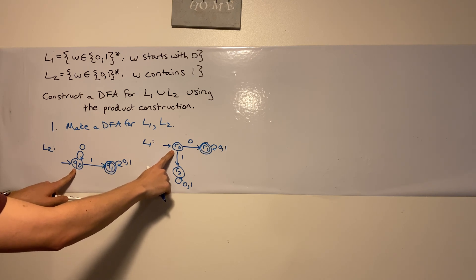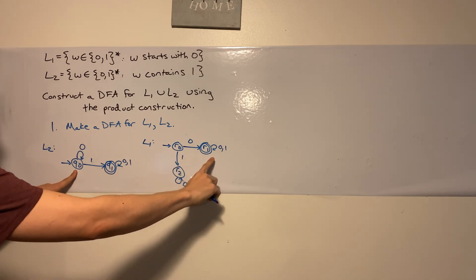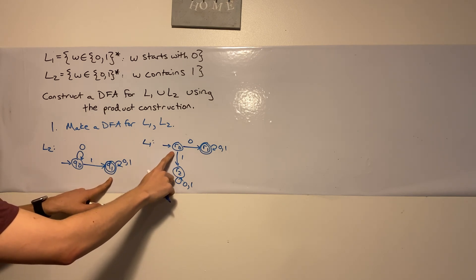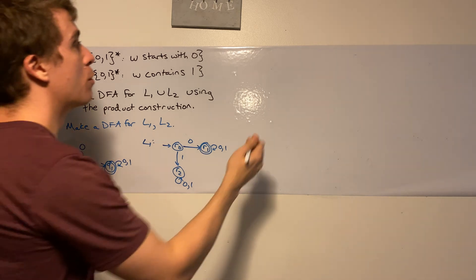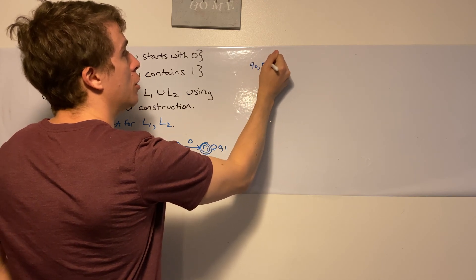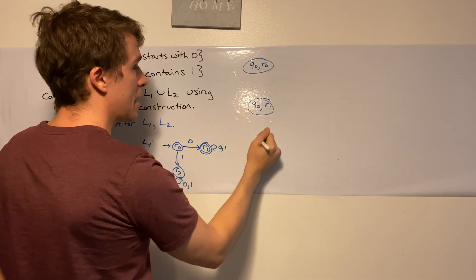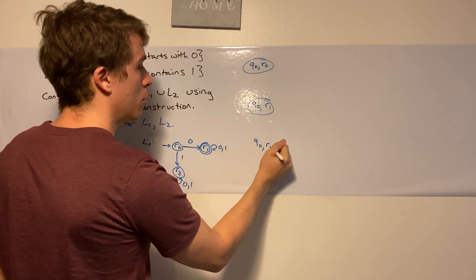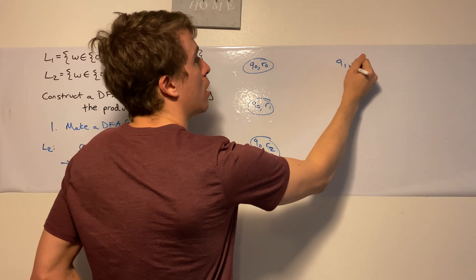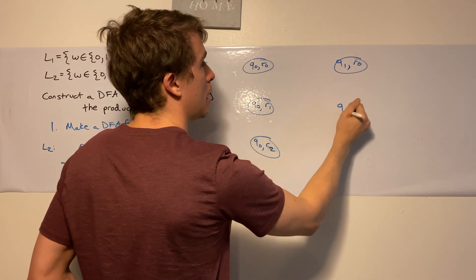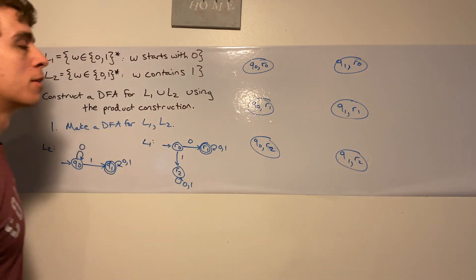And what are those six states? They're going to correspond to the pairs, hence again, product, Cartesian product. So I'm going to have the pairs q0, r0, q0, r1, q0, r2, q1, r0, q1, r1, q1, r2, every pair of states. So let's write out what those states are. So q0, r0 is going to be a state, q0, r1 as a state, q0, r2, q1, r0, q1, r1, and q1, r2. So those are my states.